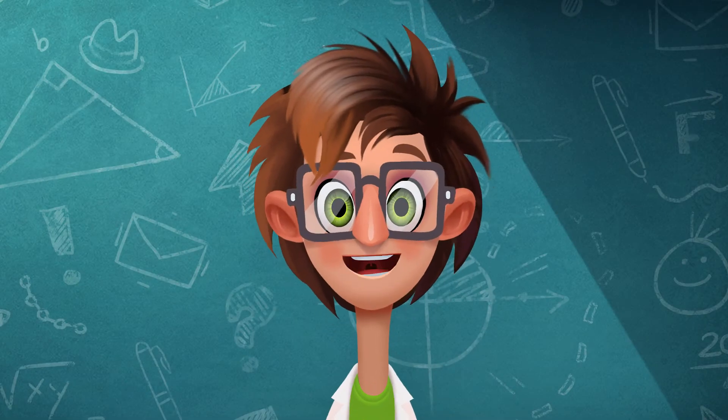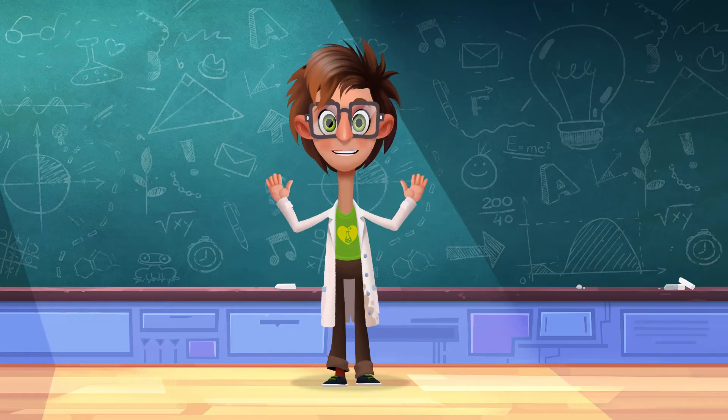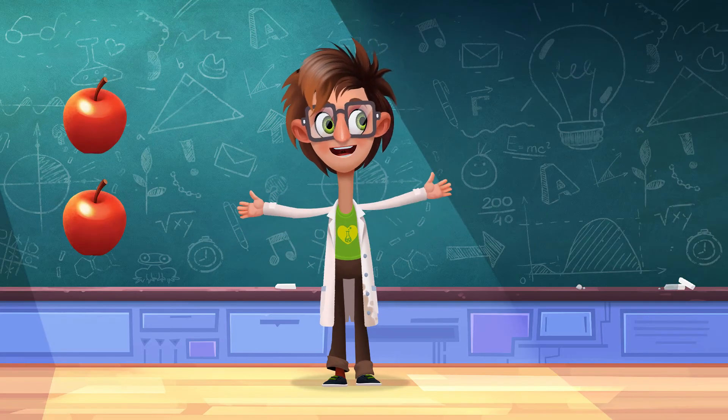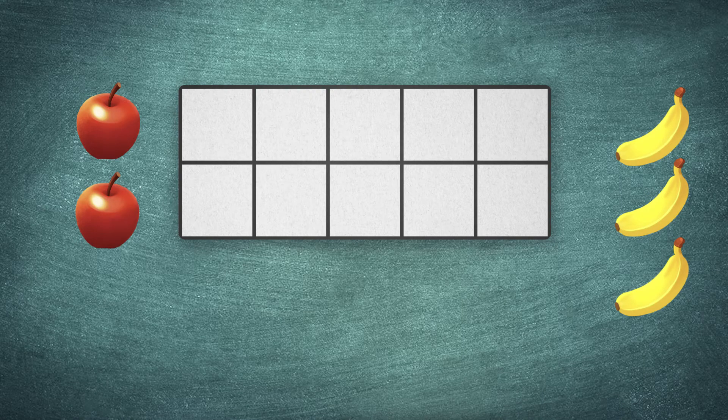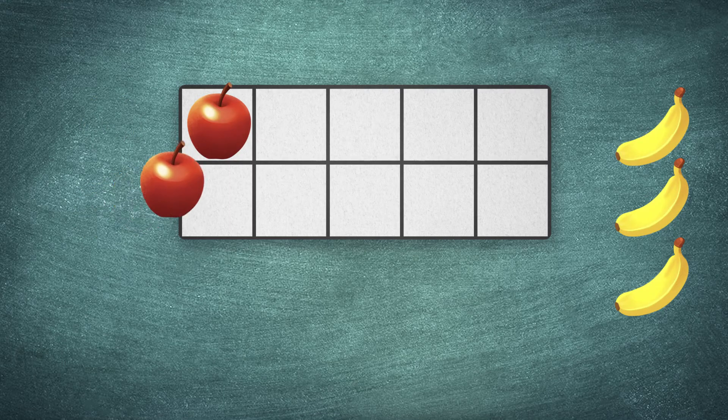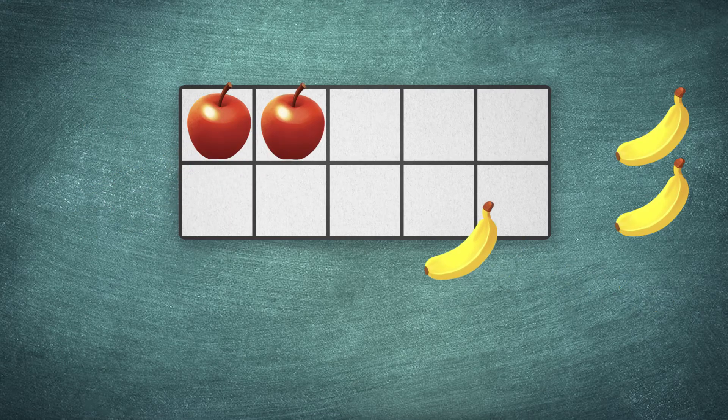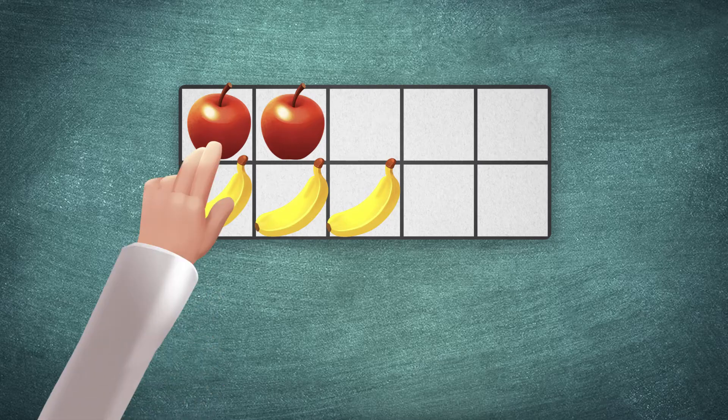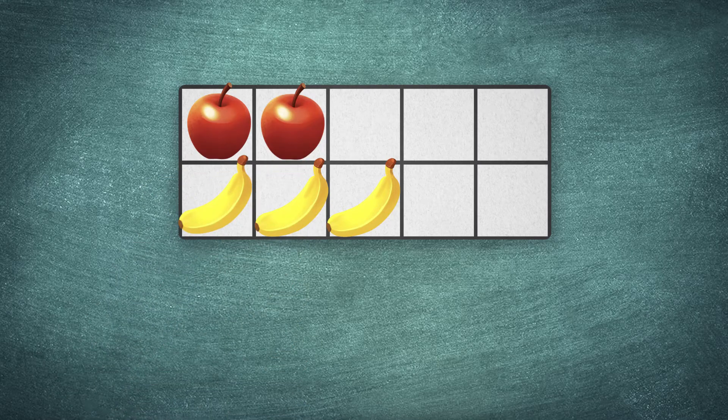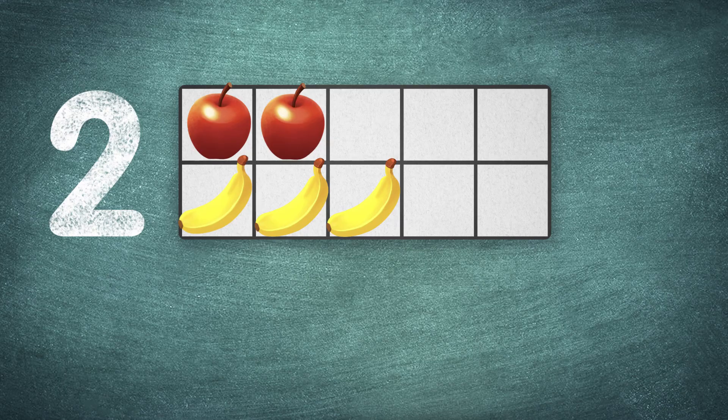Let's solve another problem. Do we have more apples or bananas? Let's count these apples and bananas by placing them in two rows. The top one for the apples, the bottom one for the bananas. How many apples do we have? One, two. Two apples. There are two apples.